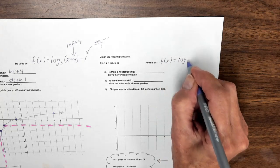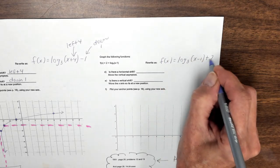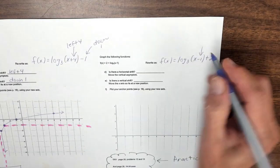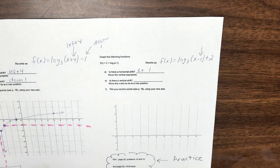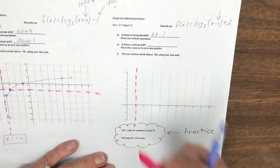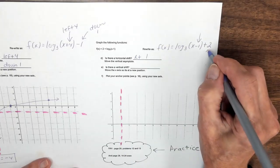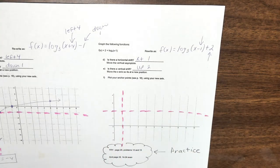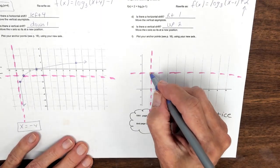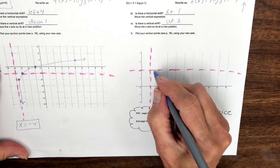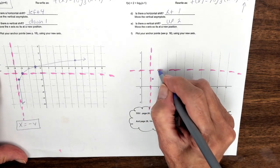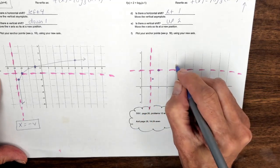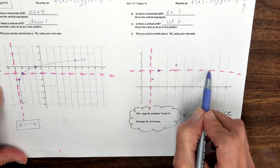Let's do another one. I'll move the 2 over and rewrite as f(x) = log base 3 of (x minus 1) plus 2. Is there a horizontal shift? Yes — going to the right 1, so plot the new vertical asymptote one unit to the right. Is there a vertical shift? Yes — going up 2. Now use the anchor points with the new origin: right 1/3 and down 1, then (1, 0), then right 3 and up 1, then right 9 and up 2. There you have it.